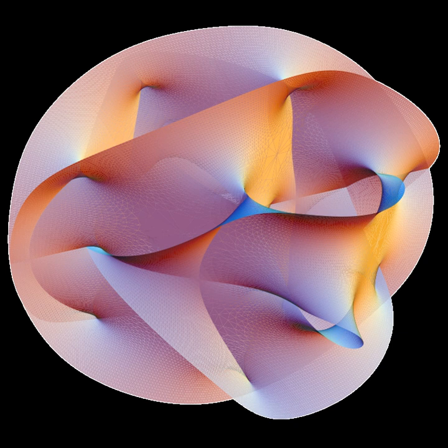In string theory, believed to be a consistent theory of quantum gravity, the graviton is a massless state of a fundamental string. If it exists, the graviton is expected to be massless because the gravitational force is very long-range and appears to propagate at the speed of light.